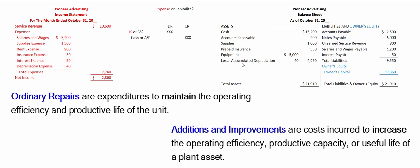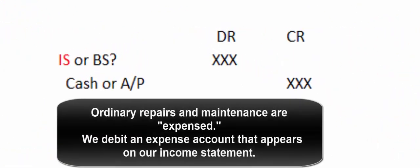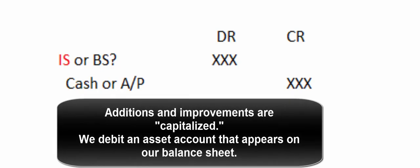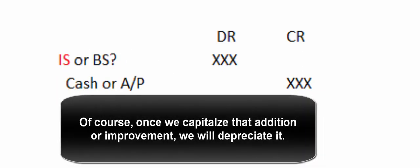For example, we have a delivery truck that goes in for an ordinary tune-up — $250. We debit repair expense, credit cash. We take that same truck in for a major engine overhaul that's going to extend the useful life of that truck. We're going to debit an asset and credit cash.